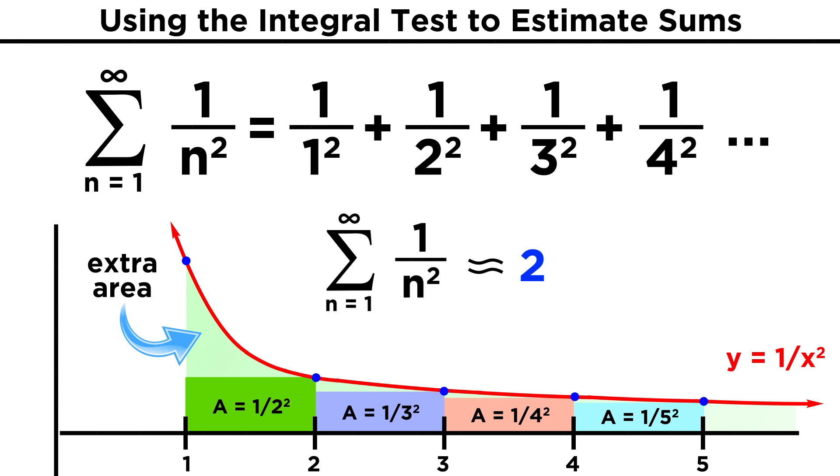Now we know that the rectangles don't quite fill up the total area, as there are some empty spaces, so the integral is bigger than what we really wanted, and therefore the actual value for the sum of the series must be a little less than two. But we've still done a pretty good job at getting some information about the series.